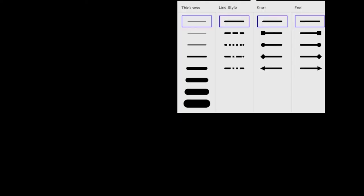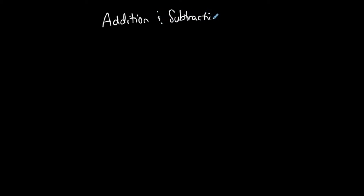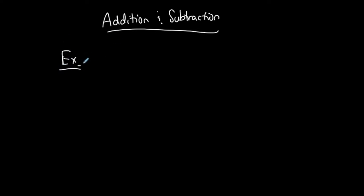I'm going to show you some examples of adding and subtracting polynomials. This is addition and subtraction of polynomials. You're going to get into operations of polynomials — in mathematics that's basically addition, subtraction, multiplication, and division. Starting with addition and subtraction, you can add or subtract any type of polynomial. They can have different terms, the same number of terms — let's just do a couple of examples because this is not very difficult.